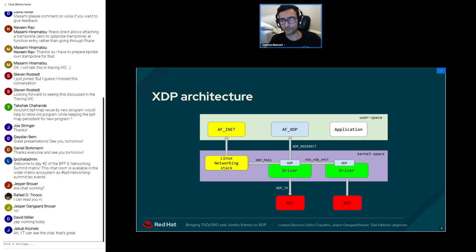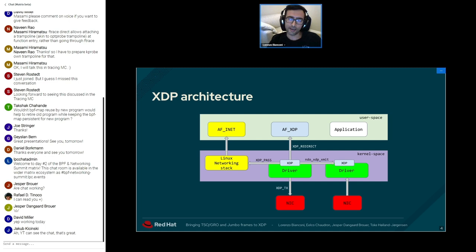If the XDP program loaded on the NIC returns XDP pass, the buffer is converted into an SKB and forwarded to the networking stack. If XDP drop is returned, the packet is dropped as early as possible, for example to implement anti-denial-of-service. XDP tx bounces the frame back to the interface, for example to implement a load balancer. Or we can redirect the frame to an AF_XDP socket or to a remote NIC where the NDO XDP XMIT pointer is executed.